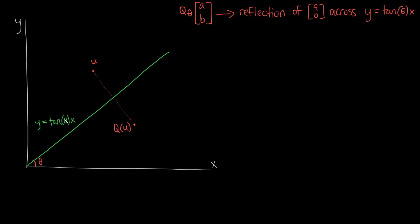A quick note about the equation tangent of theta times x. It looks like it might be complex, but because of the way the tangent function works — as you approach 90 degrees, the tangent function explodes to infinity — this line will actually have an angle with the x-axis of exactly theta degrees, which is going to end up being very useful in this problem.